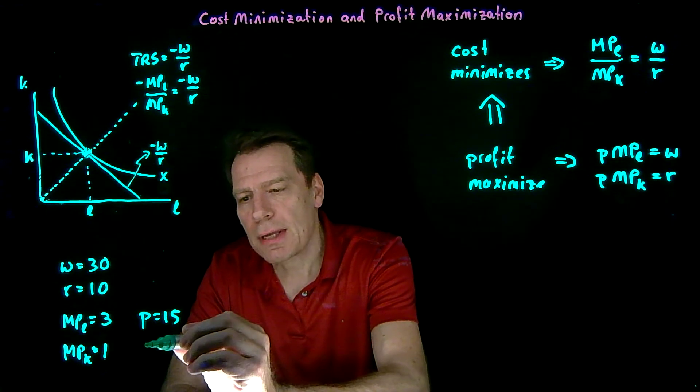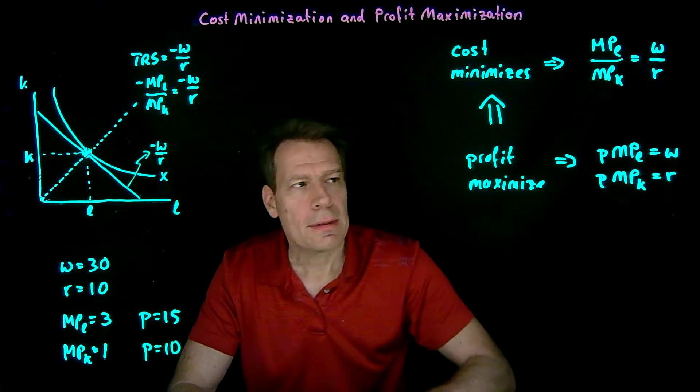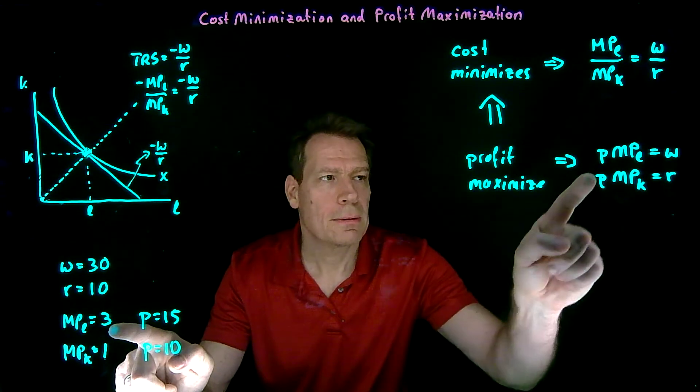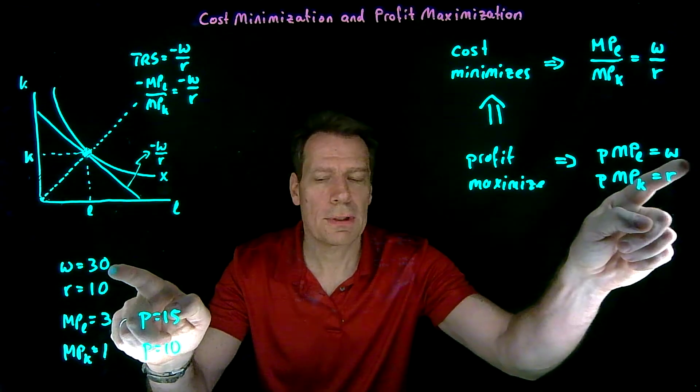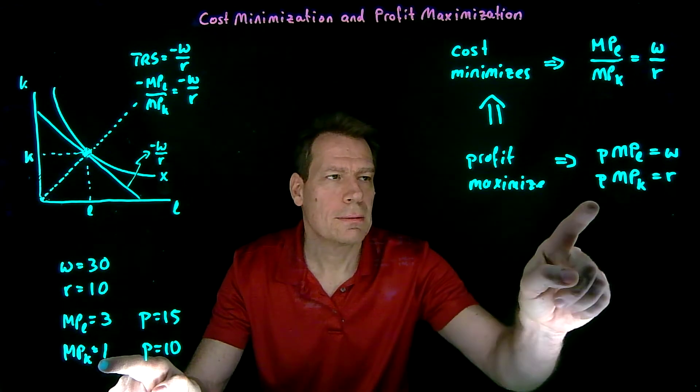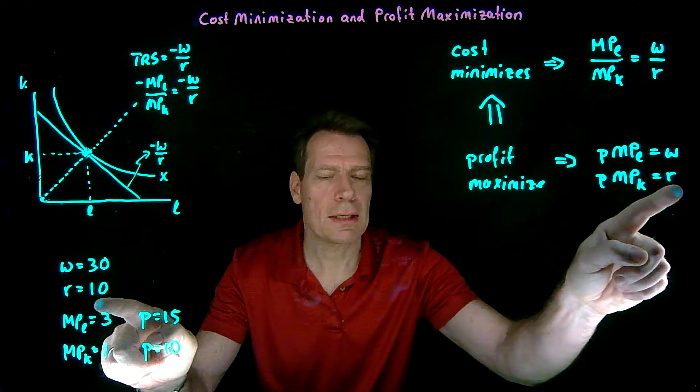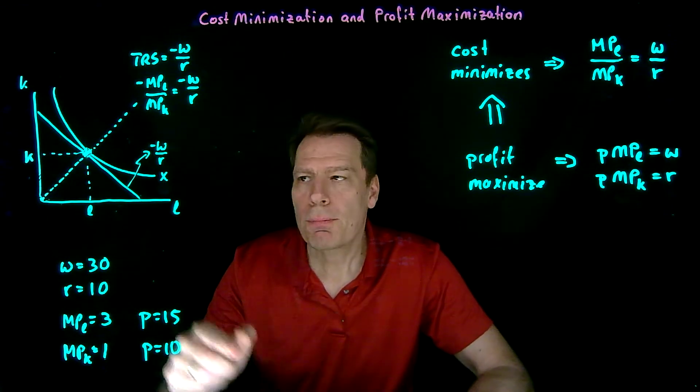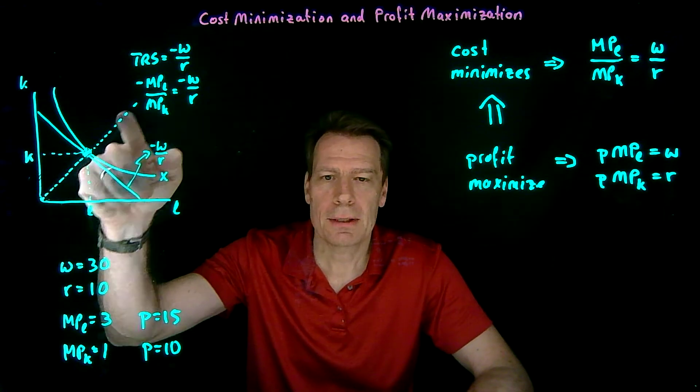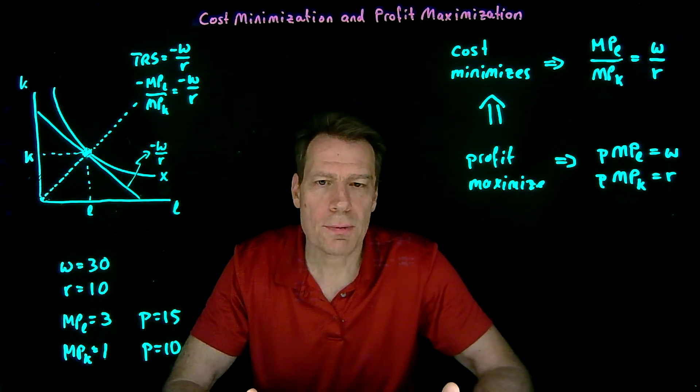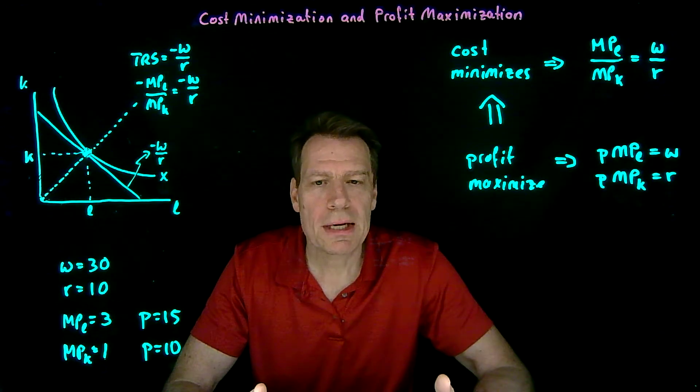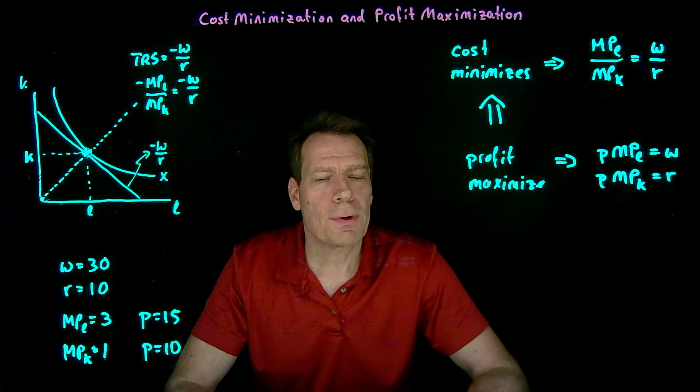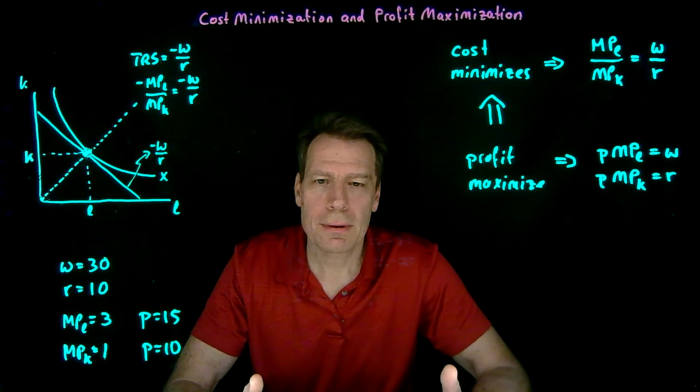If the price was 10, on the other hand, then these conditions suddenly hold. 10 times 3 is 30, and the wage is 30. 10 times 1 is 10, and the rental rate is 10. So as the prices change, different points along this ray that contains all the cost minimizing ways of producing will become profit maximizing points.